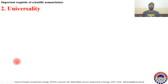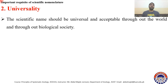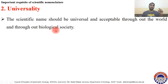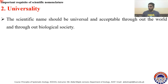The second important requisite for scientific nomenclature is universality. The scientific name should be universal, meaning it should be known throughout the world and acceptable throughout the world and throughout biological society. Names which are not acceptable throughout the world or within biological society should not be used.